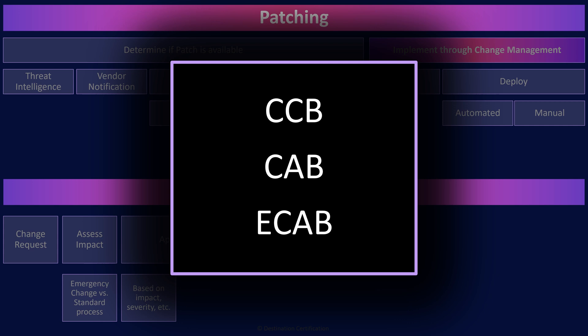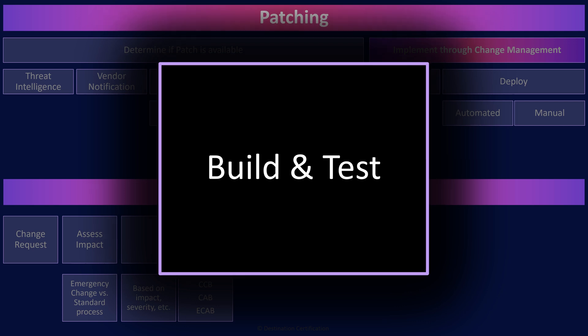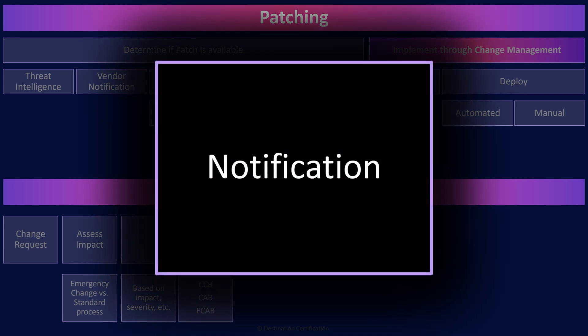Approvals are not just required right before a change is made — they may be required at various steps throughout the change management process. Changes such as new software, patches, a new camera system, or a new front gate need to be built and tested before they're deployed into production. Notifications to relevant stakeholders occur throughout the change management process: before, possibly during, and after a change has been made.